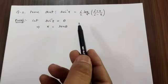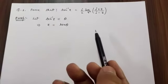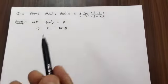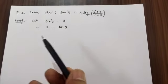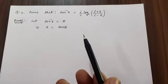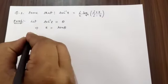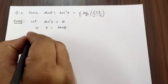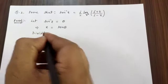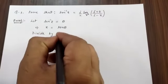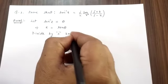The componendo and dividendo property states: if a/b = c/d, then (a+b)/(a-b) = (c+d)/(c-d). We divide both sides by i, so z/i = tan θ/i.